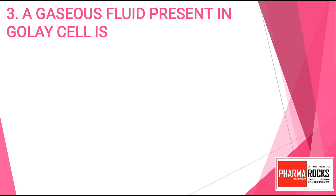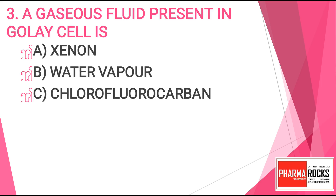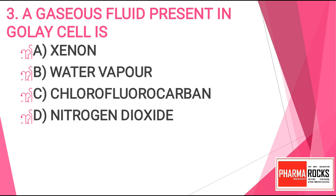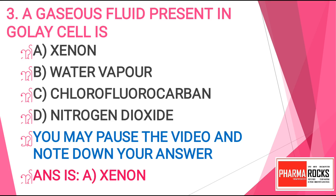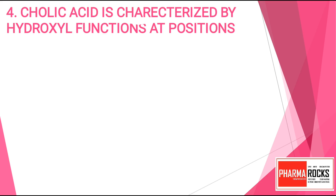Question number 3. Gaseous fluid present in gall cell is: Option A. Xenon. Option B. Water vapour. Option C. Chlorofluorocarbon. Or Option D. Nitrogen dioxide. You may pause the video and note down your answer. The correct answer for this question is Option A. Xenon.